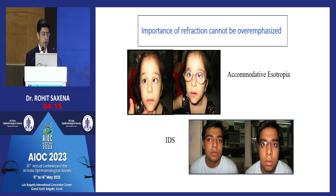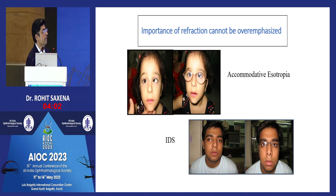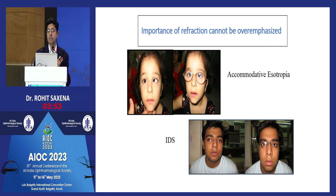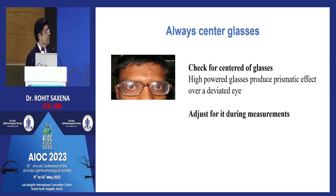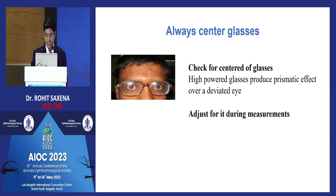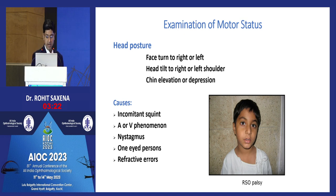The importance of refraction cannot be overemphasized. Not only accommodative esotropias but divergent squints also need good glasses. Dynamic factors like accommodation and fusion control deviation — a divergent squint may correct from manifest to intermittent just by improving visual acuity, avoiding surgery. High refractive errors should be checked for centration, as a decentered lens produces a prismatic effect affecting strabismus measurements. Always identify head postures but do not correct them first — causes include nystagmus, strabismus patterns, and refractive errors.